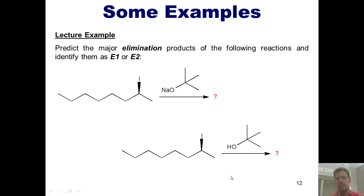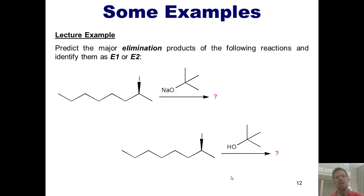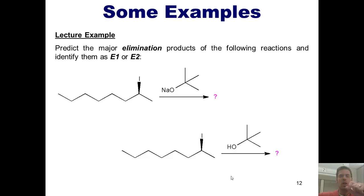Why do strong bases favor E2 instead of E1? E1 reactions require the leaving group to leave first, generating a carbocation intermediate — a very slow process because carbocations are unstable, even tertiary or resonance-stabilized ones. A strong base with a localized negative charge won't wait for the leaving group to fall off before attacking. A weak base, however, will sit in solution and wait until the leaving group departs and a carbocation forms, and then do the attacking.